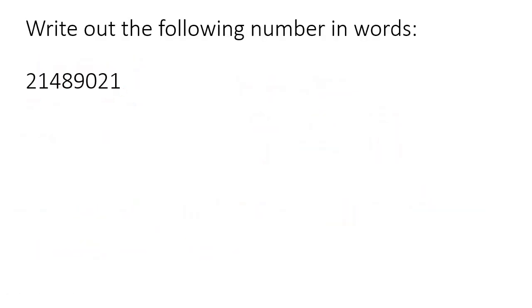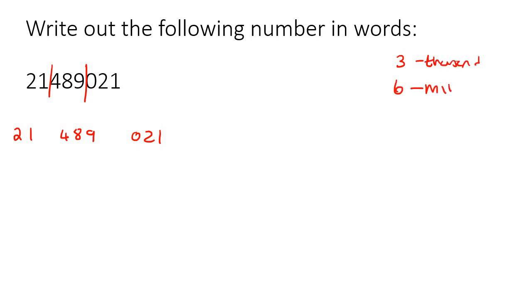Let's keep practicing. Step one: start at the back and break the numbers into threes. So we have 21,489,021. Remember: three means thousand, six means million, and nine means billion. There will be questions in this lesson where we're going to use billion.